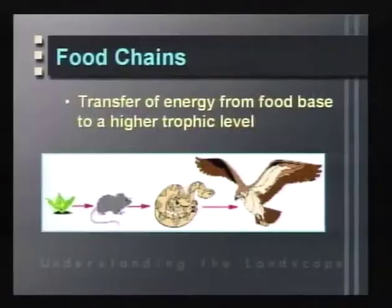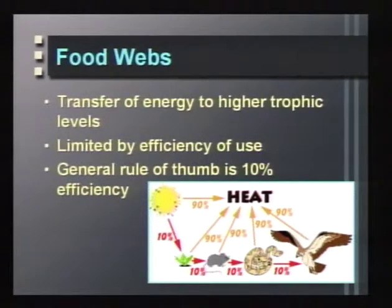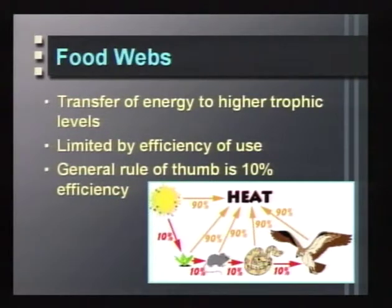One characteristic of trophic levels is the transfer of energy up through organisms in a food chain — from the food base through different organisms to higher trophic levels. This transfer is limited: you do not get 100% efficiency of transfer along the food chain. Only a certain portion of solar radiation is usable by plants, and each step up the trophic levels can only transfer about 10% of the energy present at the next lower level.